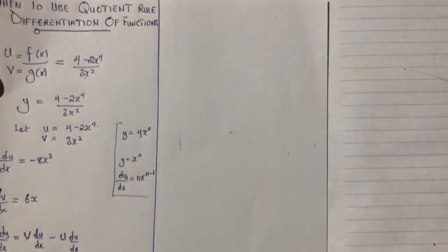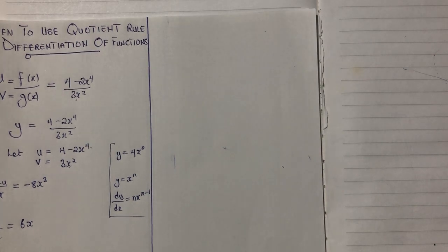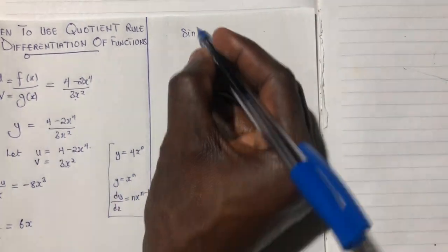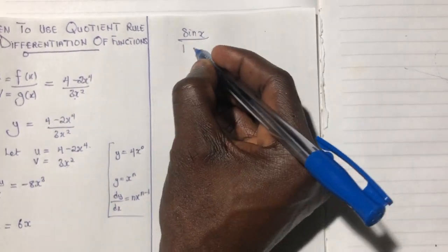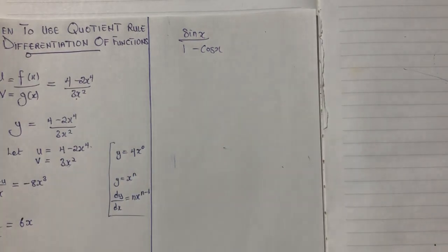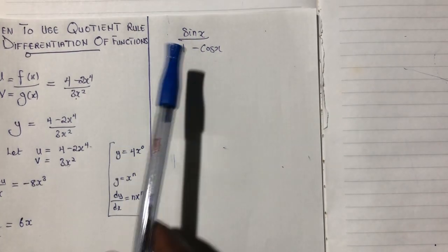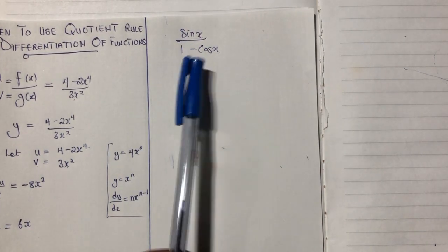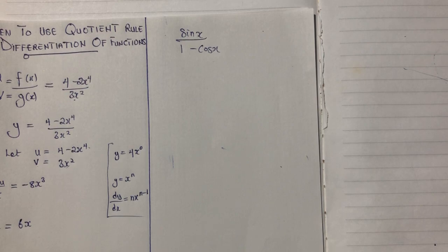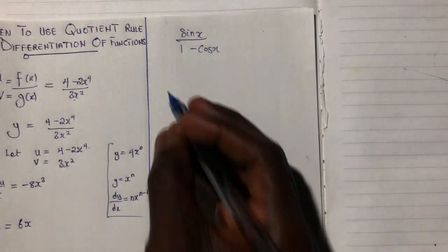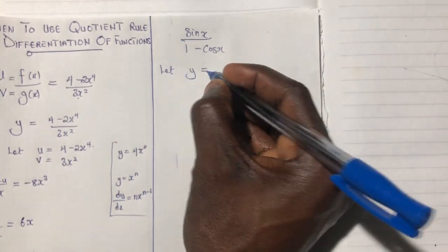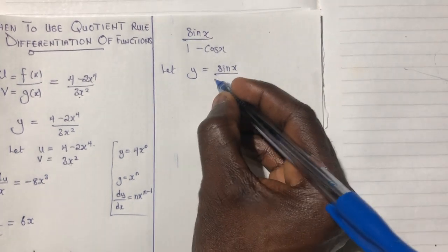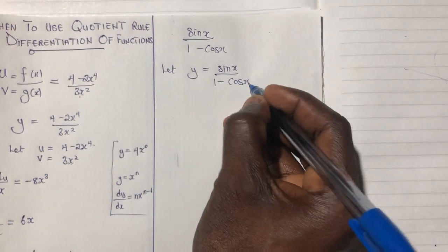I'll take another example. What if I'm given a function and told to differentiate sin(x) all over (1 minus cos x)? Since the equation has not been equated to y, I will say let y be equal to sin(x) all over (1 minus cos x).